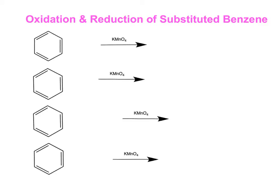What happens in these reactions is whenever there's a carbon group coming off of an aromatic ring, as long as there are some hydrogens attached to that carbon, the product of the reaction is an aromatic ring with a benzoic acid group attached.